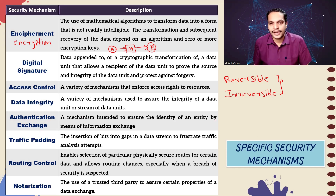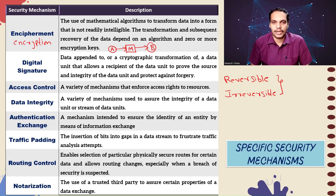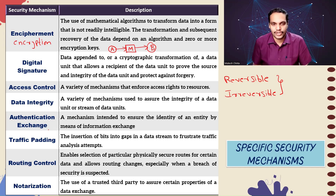Next is authentication exchange — a mechanism intended to ensure the identity of an entity by means of information exchange. Simply put, the information exchanged between A and B assures A of the identity of B, and vice versa, ensuring B that the identity of A is genuine. That comes under authentication exchange.